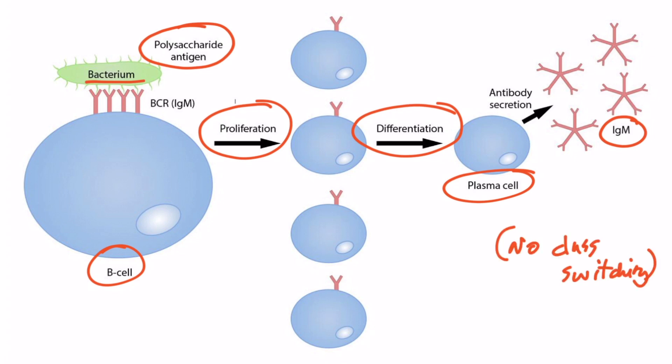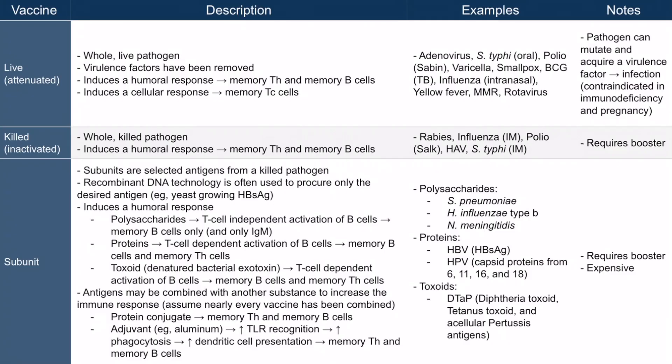Helper T cells are needed to cause class switching and lead to the formation of IgA, IgE, or IgG antibodies. So again, purely polysaccharide vaccines induce the formation of memory B cells only, and only IgM antibodies can be produced.